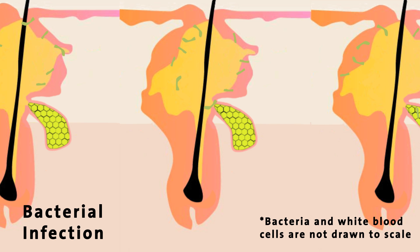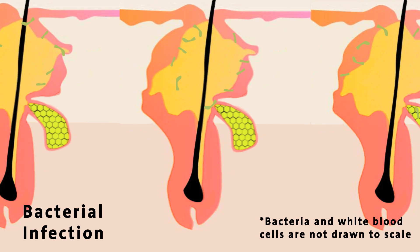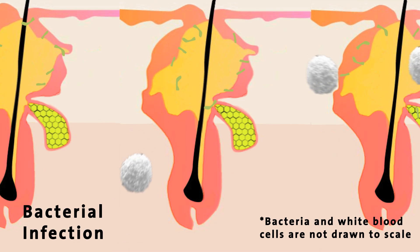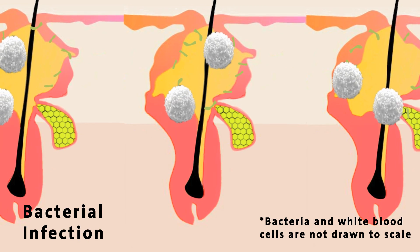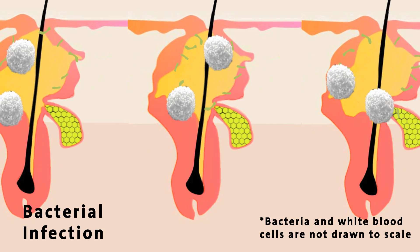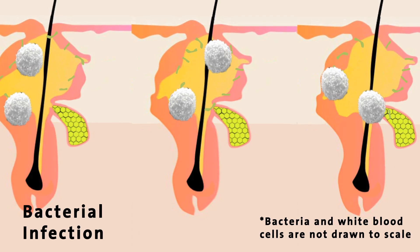A blocked pore initially turns red because blood rushes to the site, which is one of the ways our bodies respond to infections. Then, white blood cells, a type of blood cell responsible for fighting infection, destroy bacteria, build up below the surface of the skin, and eventually die.